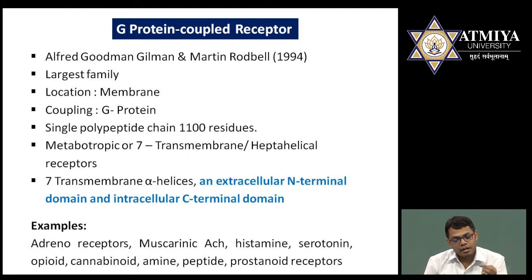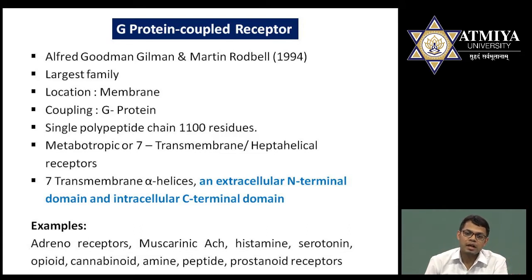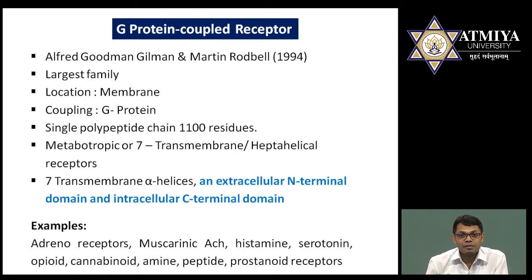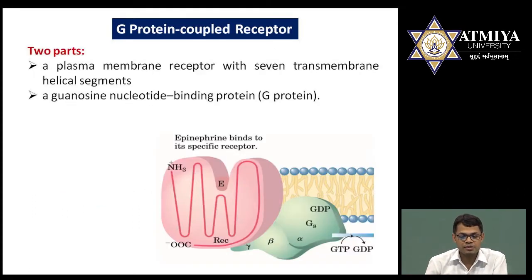GPCRs have an extracellular N-terminal region and an intracellular C-terminal region. The best example is adrenoreceptors, which respond to epinephrine. Other examples include muscarinic, histamine, serotonin, opioid, cannabinoid, peptide, and amine receptors. Most drugs binding to these receptors are responsible for different biological responses, including opioid and cannabinoid drugs.